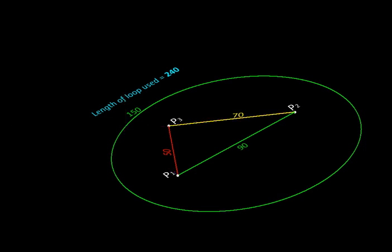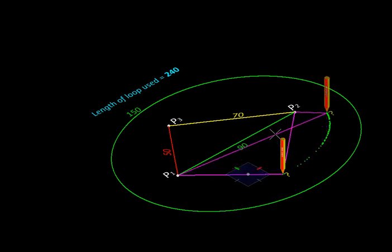When we go to the other side of P1 and P2, this length, say 70 plus 50 equal to 120 units, will be locked up in inactive position. So only this much is left for drawing our ellipse. We will get a different ellipse, a smaller ellipse like this.